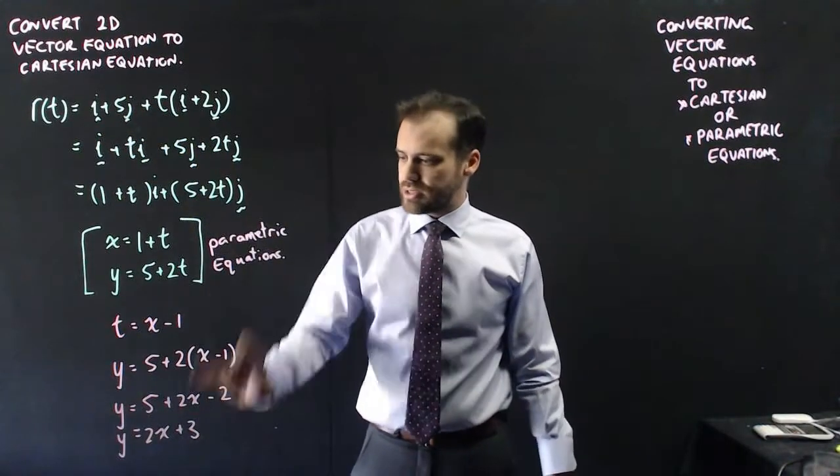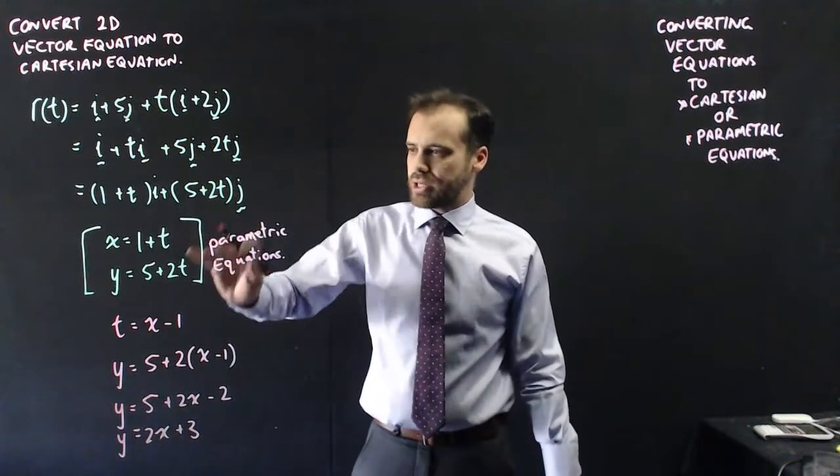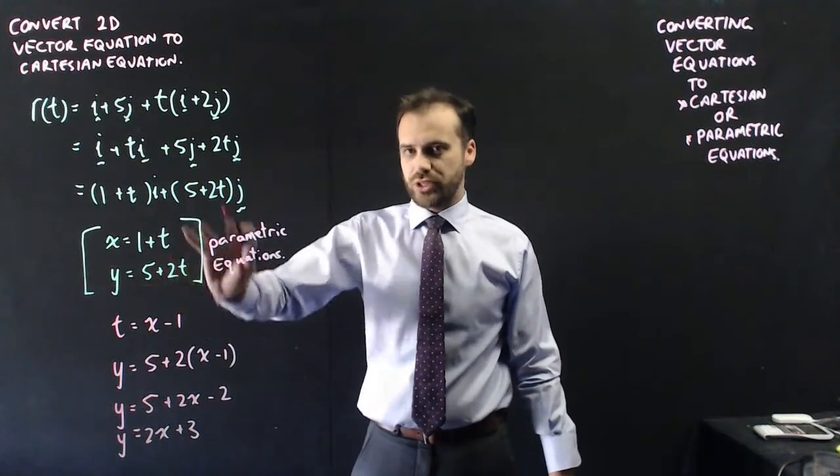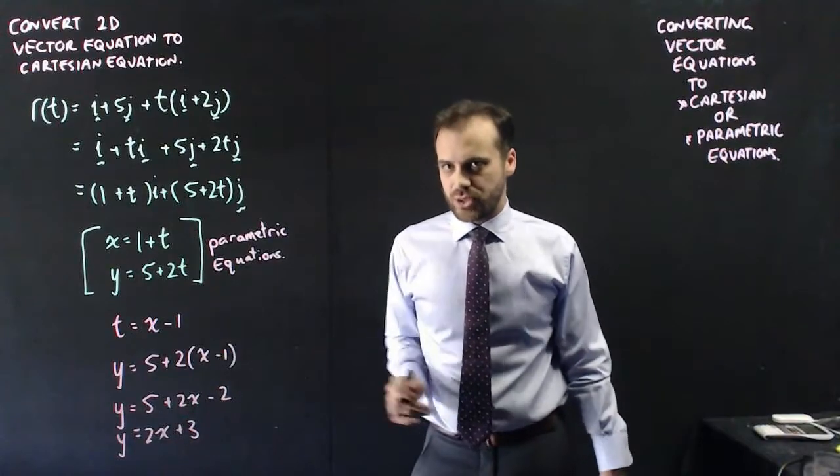And that is our Cartesian equation of this vector equation. So you can see that if we want to come up with a Cartesian equation, by default we pass through this parametric equations, and then end up at the Cartesian equation.